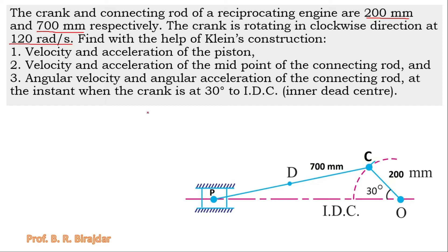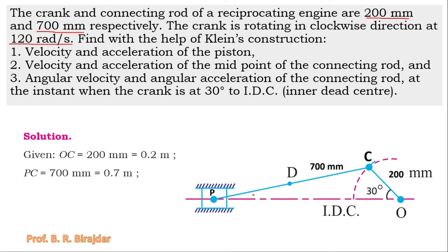From the given data: the OC distance (crank) is 200 mm, which converts to 0.2 meter. The PC distance (connecting rod) is 700 mm, which converts to 0.7 meter. The angular velocity omega is 120 radian per second. Now we will draw the velocity and acceleration diagram using Klein's construction method.